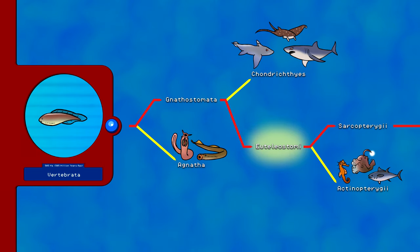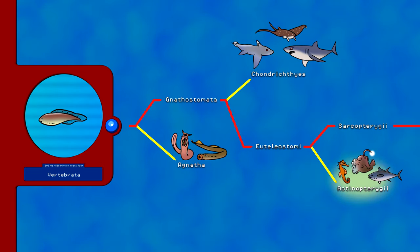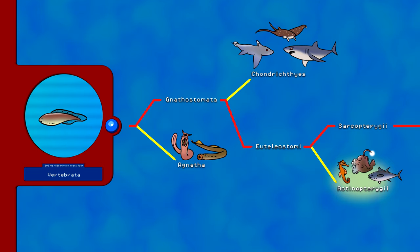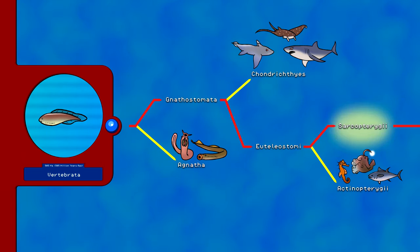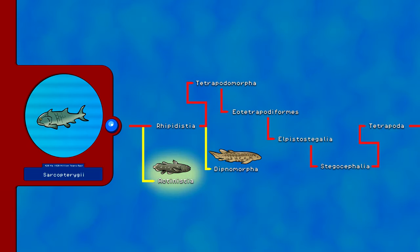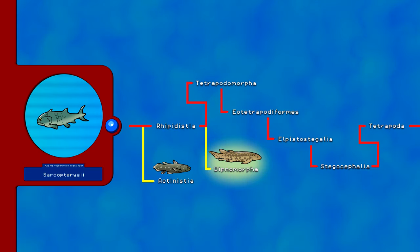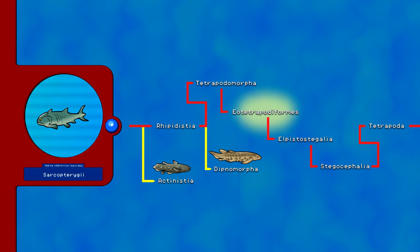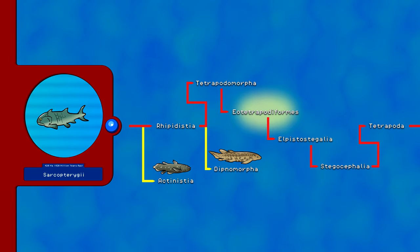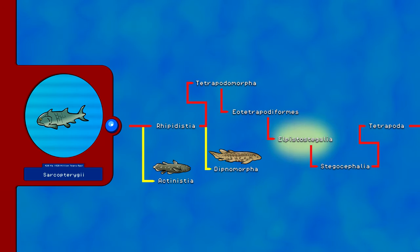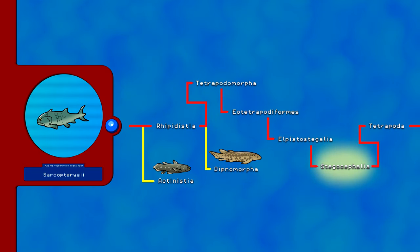420 million years ago, Osteichthyes branched into Sarcopterygii and Actinopterygii. Actinopterygii are the ray-finned fishes, which include animals like tuna, salmon, seahorses, mahi-mahi, and anglerfish. The sister to ray-finned fishes is Sarcopterygii, the lobe-finned fish. Sarcopterygii branched to include Actinistia, the coelacanths, and Rhipidistia. Rhipidistia branched to include Tetrapodomorphs and Dipnomorpha, the lungfish. Tetrapodomorpha branched further through Eotetrapodiforms, then Elpistostegalia, then Stegocephalia, each time separating extinct lobe-finned fish — including Pandericthys — until reaching the Tetrapods.